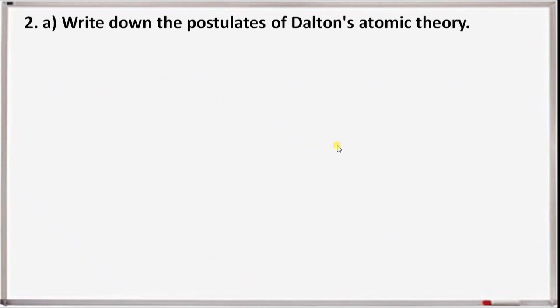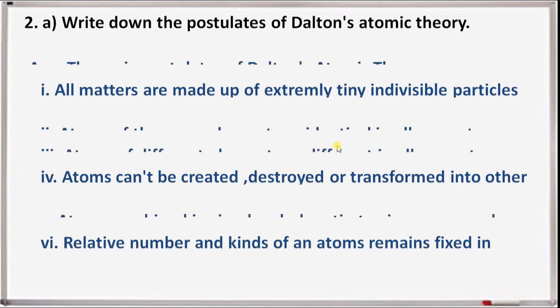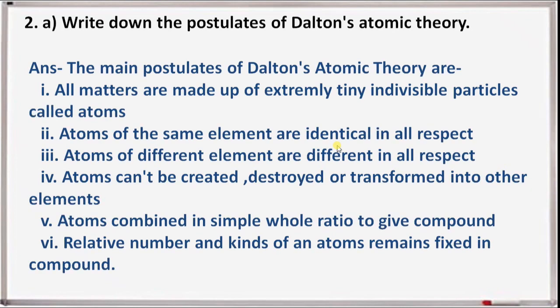Next question 2a: write down the postulates of Dalton's atomic theory. The main postulates are: all matter is made up of extremely tiny indivisible particles called atoms. Atoms of the same element are identical in all respects. Atoms of different elements are different in all respects. Atoms cannot be created, destroyed, or transformed into other elements. Atoms combine in simple whole number ratios to give compounds, and the relative number and kinds of atoms remain fixed in a compound.